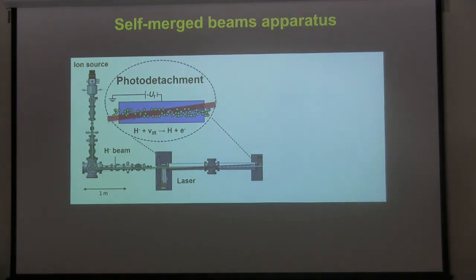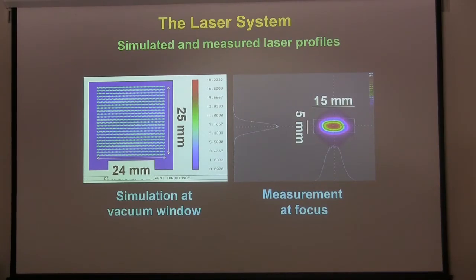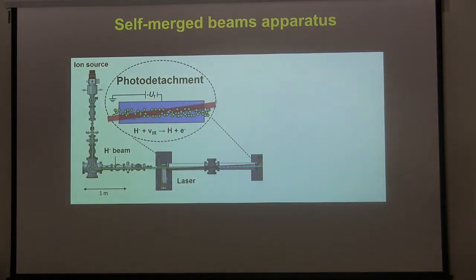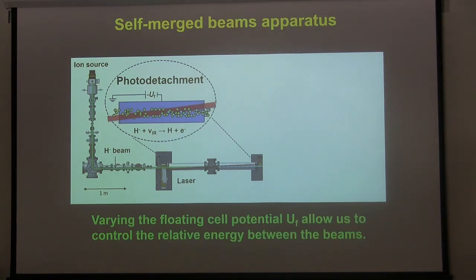The laser was bought from a company that primarily supplies military equipment — it's commercially available at about $100,000. The photo detachment happens inside a floating cell put to a potential. By varying the floating cell potential U_F, we can vary the relative energy between the beams. Before the floating cell, the H-minus beam has energy equal to the source potential, about 10 kilovolts. Inside the floating cell, the H-minus has the sum of that potential. When the beams leave the floating cell, the H-minus gets accelerated or decelerated back to its initial energy because it's charged, but the neutral hydrogen beam is unaffected.